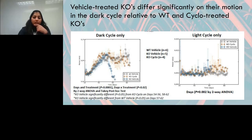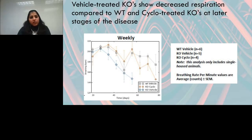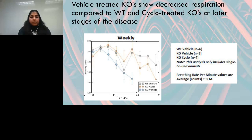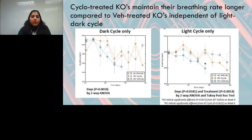Respiration data across treatment cohorts showed that cyclodextrin treatment slows the reduction in respiratory rate to later stages of the disease compared to untreated NPC mutant animals. However, cyclodextrin's benefit is time-limited — respiratory rates do eventually decline at later stages. Unlike the motion metrics, respiratory rates declined similarly in both the dark phase and the light phase, and cyclodextrin provided the same level of correction across both circadian phases.